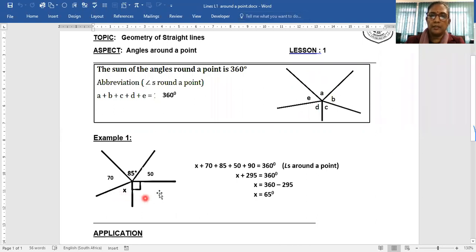So the sum of the angles are 360 degrees. It's given here that A, B, C, D, E, these angles here each add up together to give you 360 degrees. So your reason when you're working with an example like this is angles around the point.